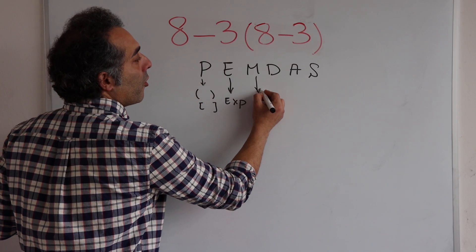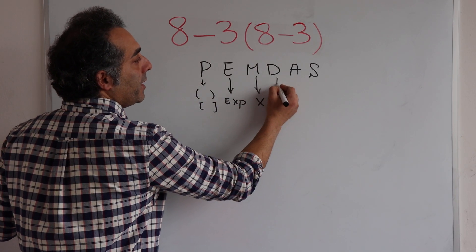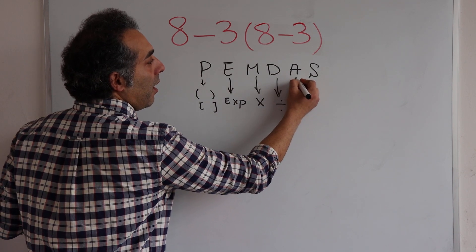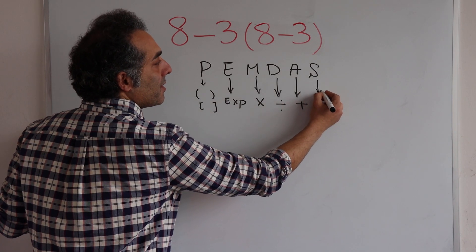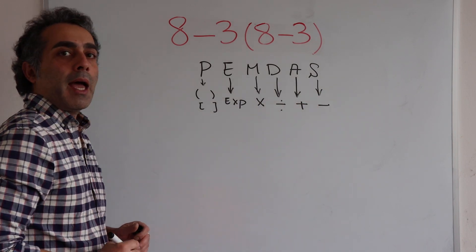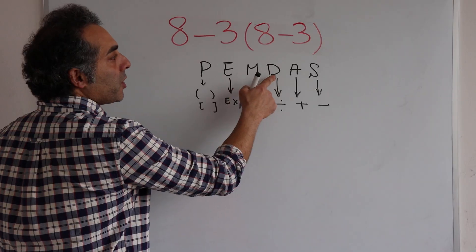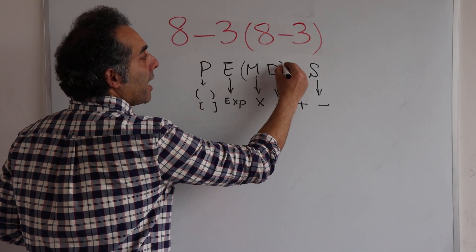M for multiplication, D for division, A for add, S for subtraction. Multiplication and division are in the same order.